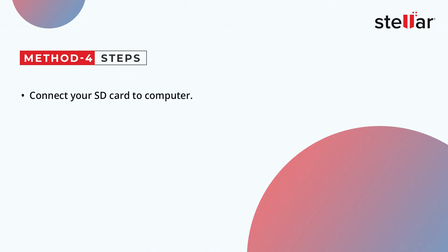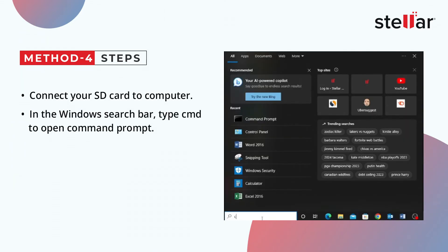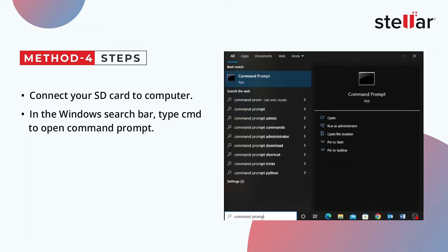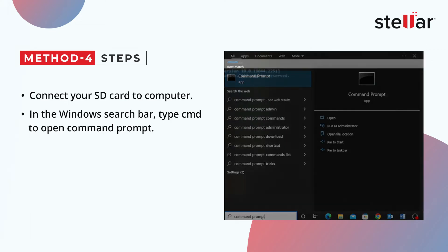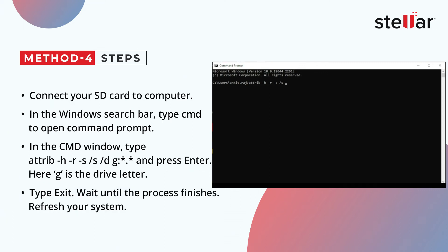Just connect your SD card to the computer. In the Windows search bar, type CMD to open command prompt. In the CMD window, type: Attrib -H -R -S followed by the drive letter (e.g., G:) with asterisk asterisk, and press Enter. Here, G is the drive letter. Then type Exit.